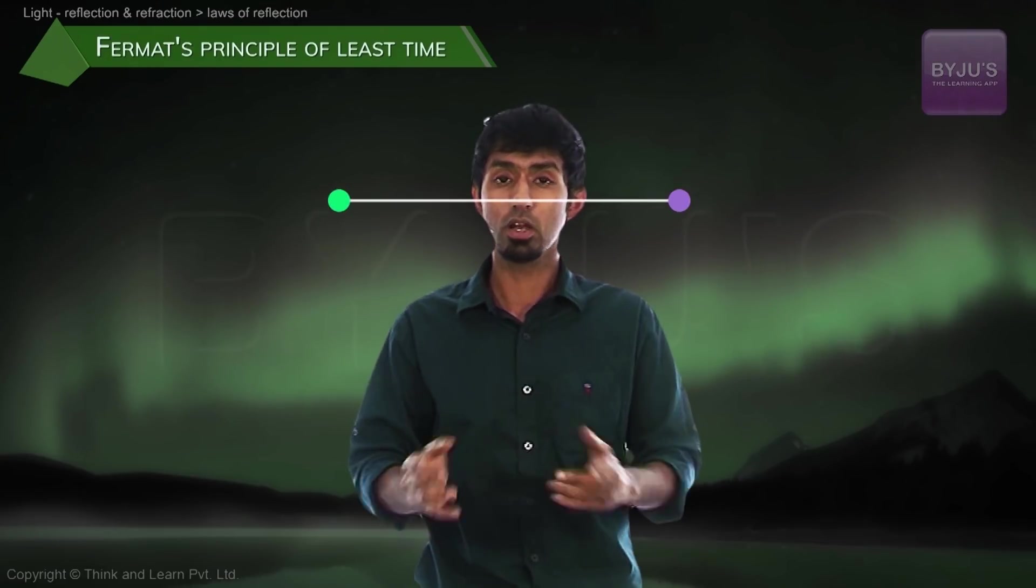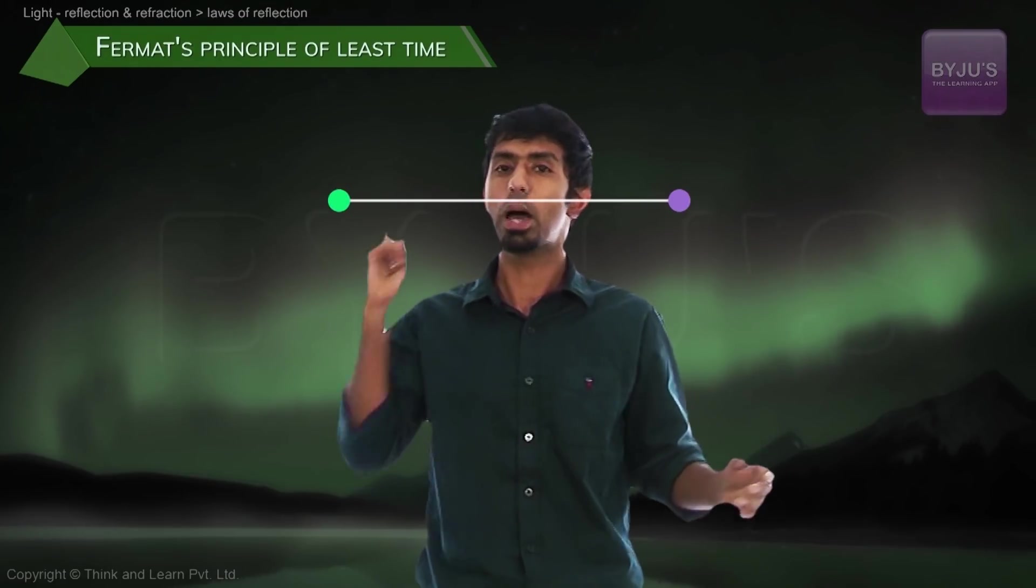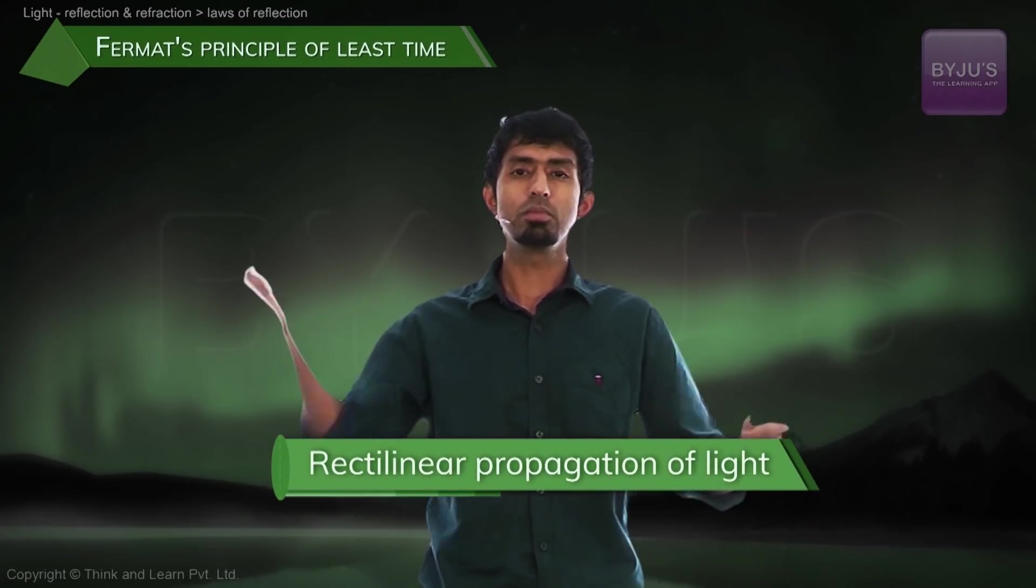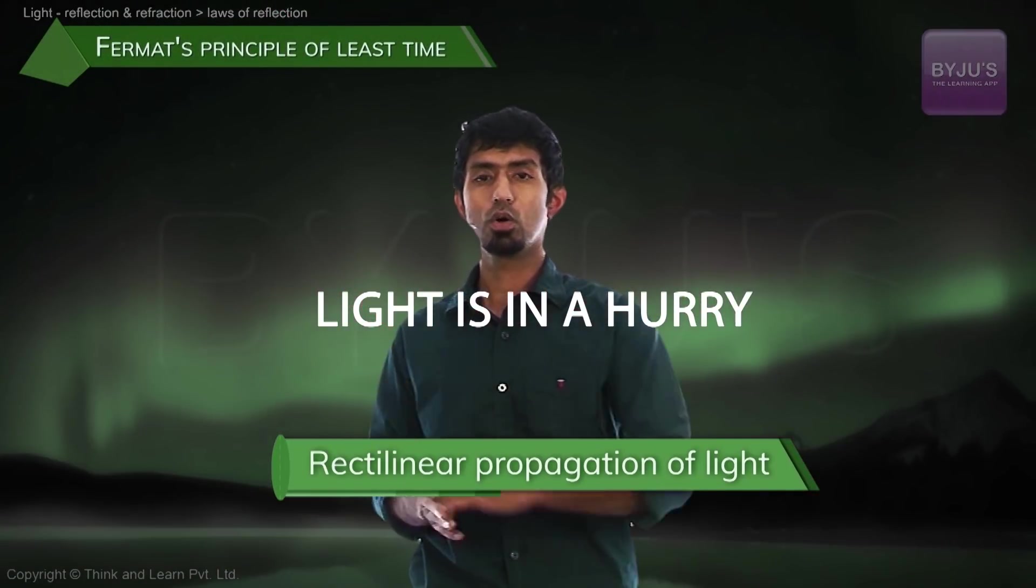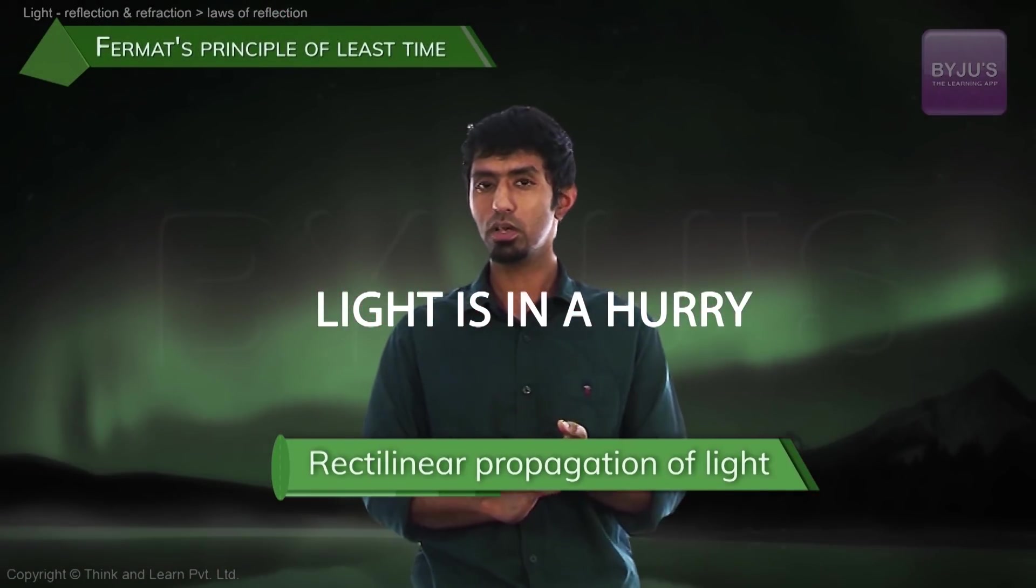Does light want to take a straight line? Not really. Light just wants to take the quickest path. It happens to be a straight line. So what have we just proved? Rectilinear propagation of light comes out of what? Light's in a hurry. Light wants to take the quickest path. Okay, we've done the first part of it.